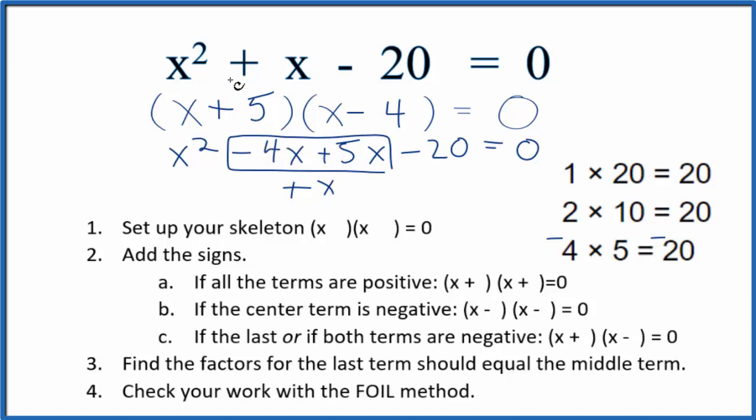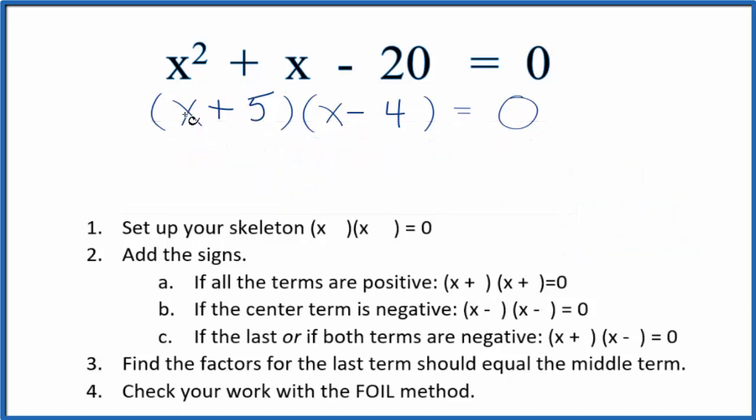Now we need to find the solutions for this equation that'll make it 0—the values we put in for x that'll make this whole thing equal 0 to be a true statement. We could say x + 5 = 0, subtract 5 from both sides, x = -5.